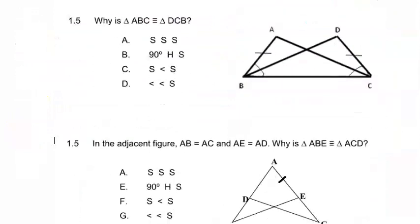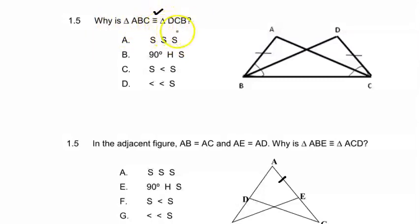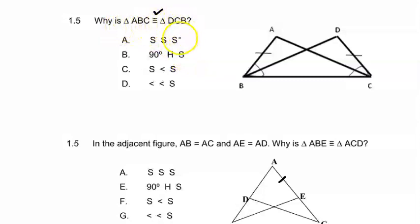This first question is a multiple choice question: why is triangle ABC congruent to triangle DCB? Firstly, let's look at the symbol for congruency — it's three horizontal bars. Remember, if you watched the previous video on similarity, there we have two vertical bars. Now, why is triangle ABC congruent to triangle DCB? The four cases are stated and we need to choose one of them.